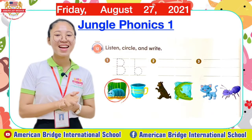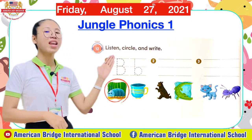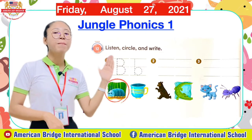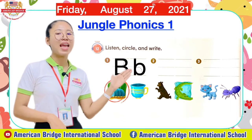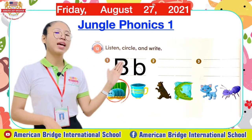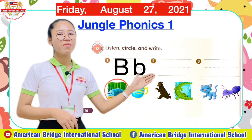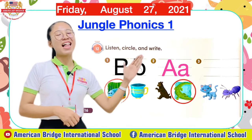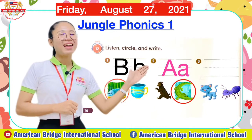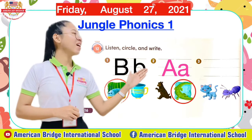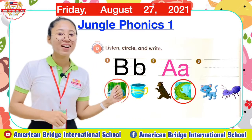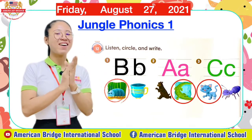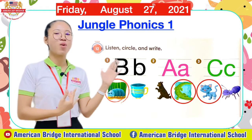Let's get the answers. The first one — we circle 'b' and write letter B. The second one — great job, we circle 'a.' The third one — we circle cat and write letter C. Wow, well done everyone! Now we finish one more exercise — you are so clever!